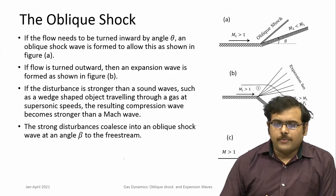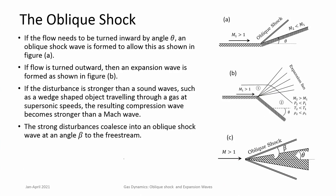Oblique shocks are formed whenever the flow has to take a turn, as depicted in this schematic. You have an oncoming supersonic flow — remember, shock waves are found in supersonic flows. The flow faces a turn towards itself, and when the flow turns towards itself it forms an oblique shock. Compression waves join together to form the oblique shock.